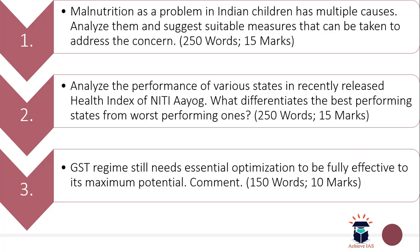The first question is: malnutrition as a problem in Indian children has multiple causes — analyze them and suggest suitable measures that can be taken to address the concern. This question has been asked in the context of a recent report about India and the number of stunted children in India. The word limit is 250 and the maximum marks are 15.